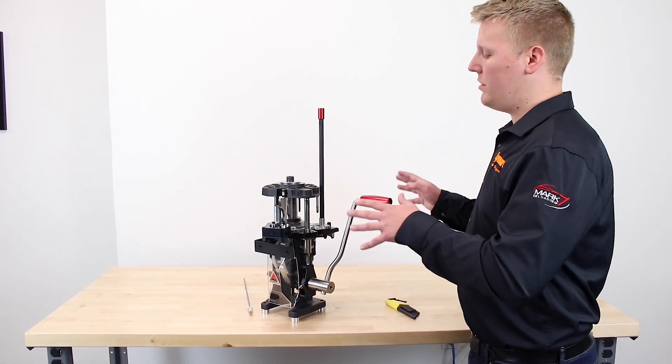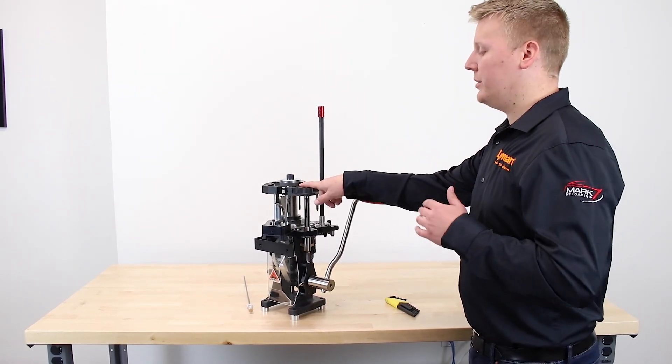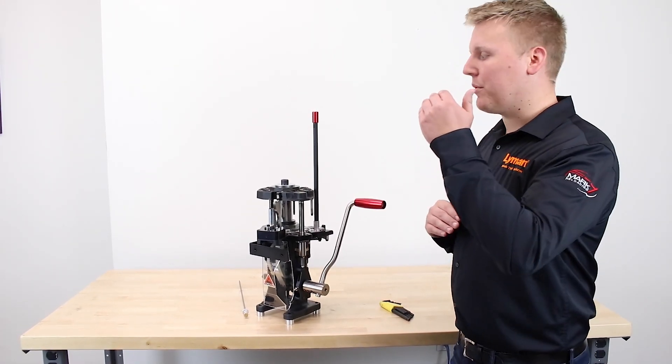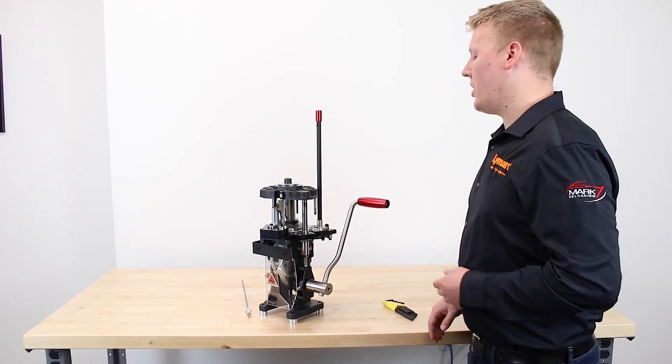Before the tool head comes off and before the press comes apart, let's do a primer depth adjustment. Simply all you've got to do is screw this allen head rocker bolt down and that's going to seat your primer more. This acts as a fulcrum on the rocker which will push the primer up deeper.